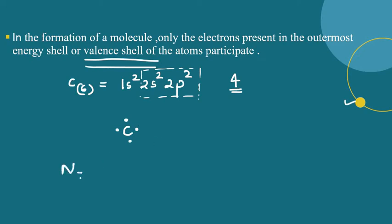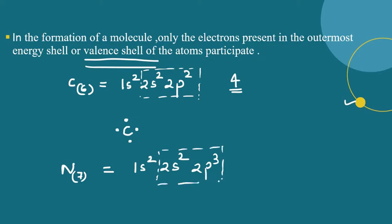Similarly, let us take the case of nitrogen. Its configuration is 1s2, 2s2, 2p3. How many electrons are there in the valence shell? There are 5 valence electrons. So we draw the Lewis symbol with 5 dots: 1, 2, 3, 4, 5.